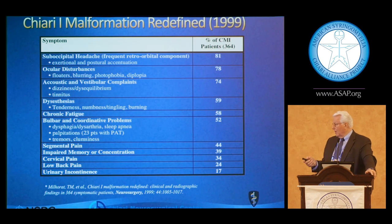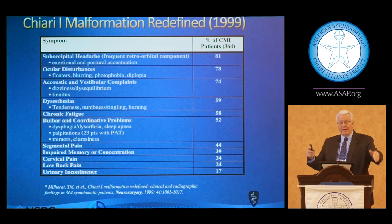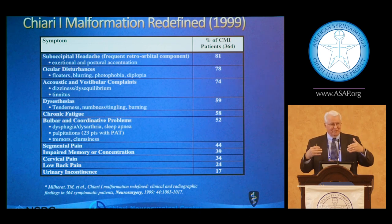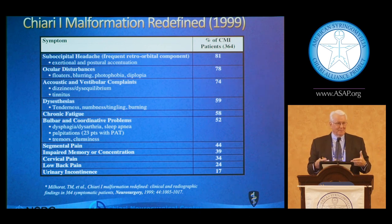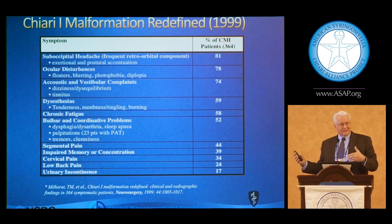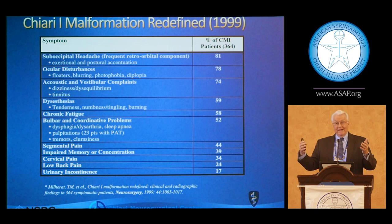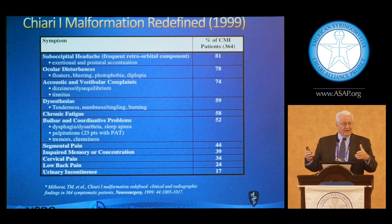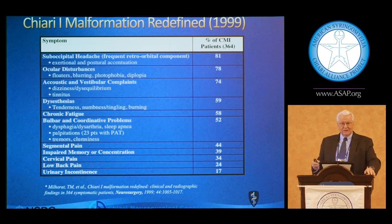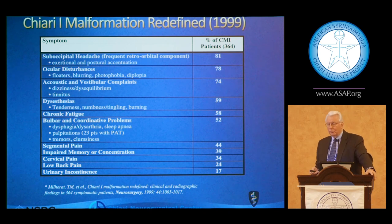In 1999, in a pivotal paper, Dr. Millerat once again defined — or tried to redefine — Chiari malformation. It really transitioned from a condition understood as cough headache, ataxia, and downbeat nystagmus to a much more complicated clinical presentation.